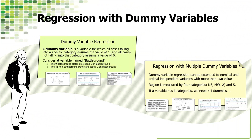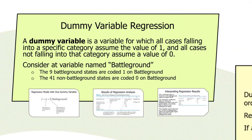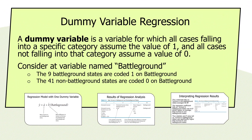In this screencast, I'd like to talk about dummy variable regression. A dummy variable is a variable for which all cases falling into a specific category of that variable assume a value of one, and all other cases not falling into that category assume a value of zero — sometimes called a binary variable.